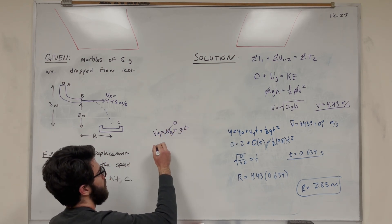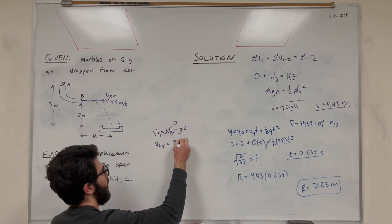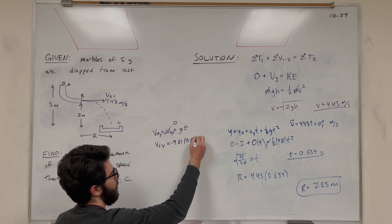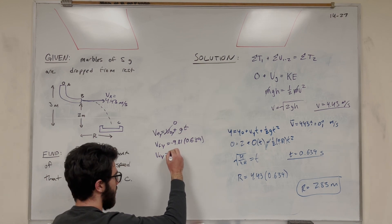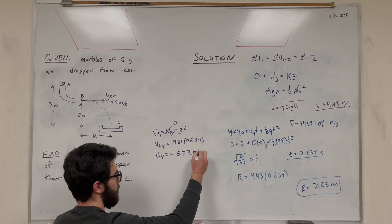So velocity initial in the y is 0, so velocity final in the y direction is just going to be -9.81, and then the time it takes to fall, we found that to be 0.639. So velocity final in y is equal to negative 6.26.